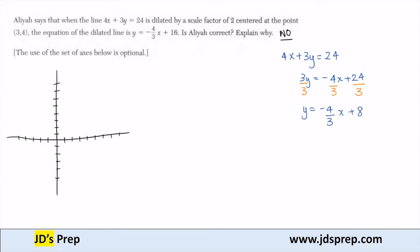So this has a y-intercept of 8. Let's mark that point here at 8. And it has a slope of negative four-thirds.